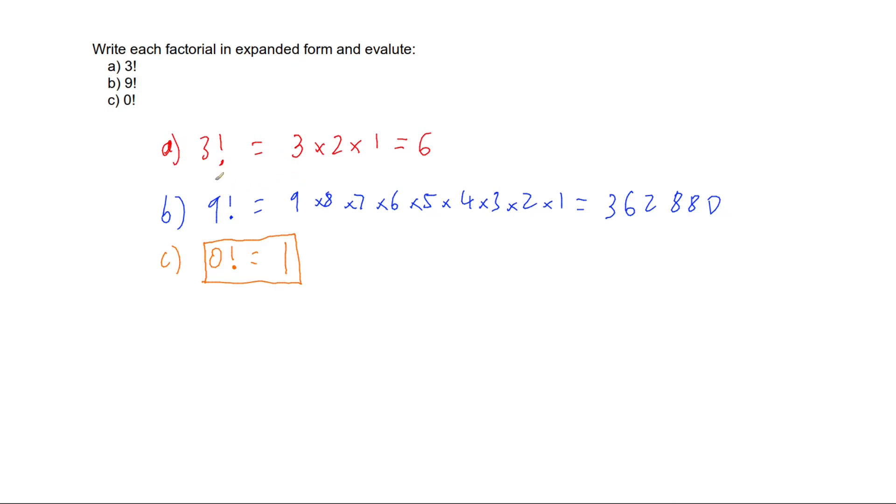So there you go. Factorial means multiply from the starting number down to 1 in increments and then work out the answer.